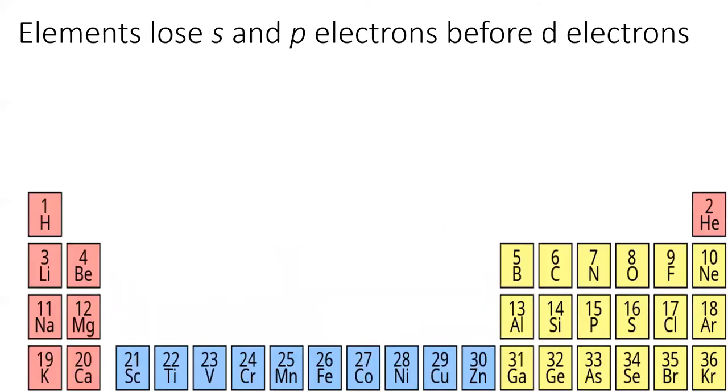When elements lose electrons to form cations, the s and the p electrons are lost before any d electrons are removed.